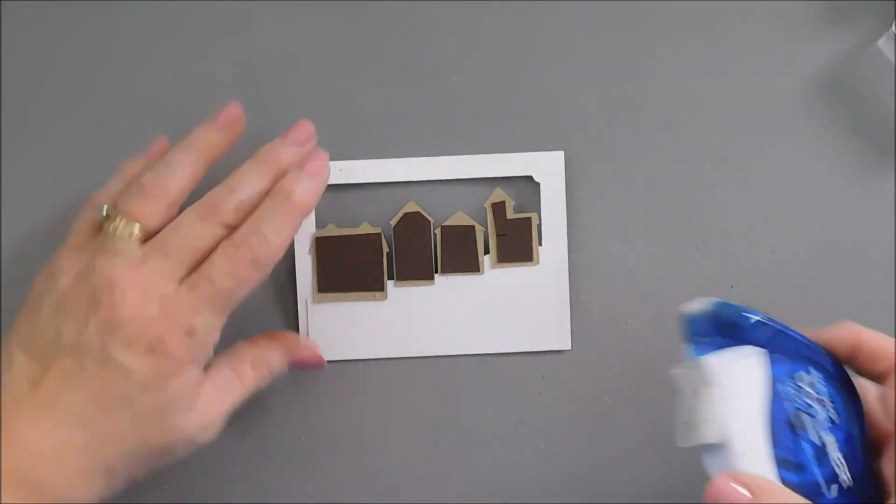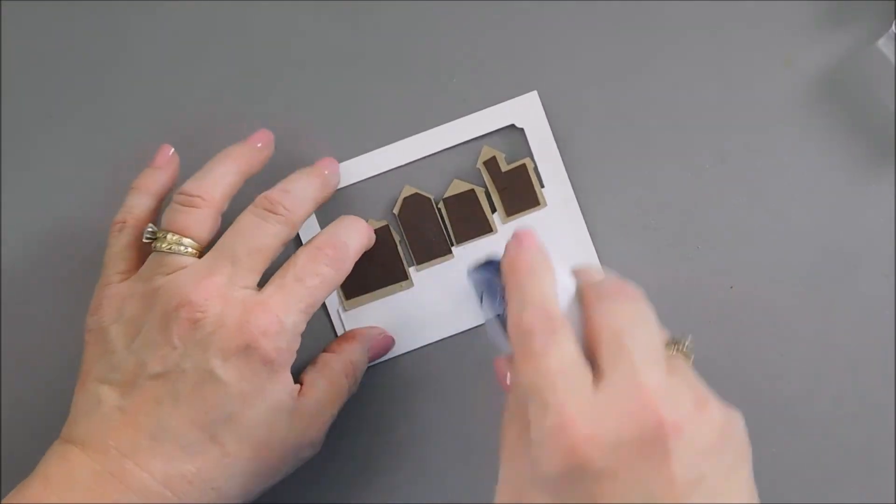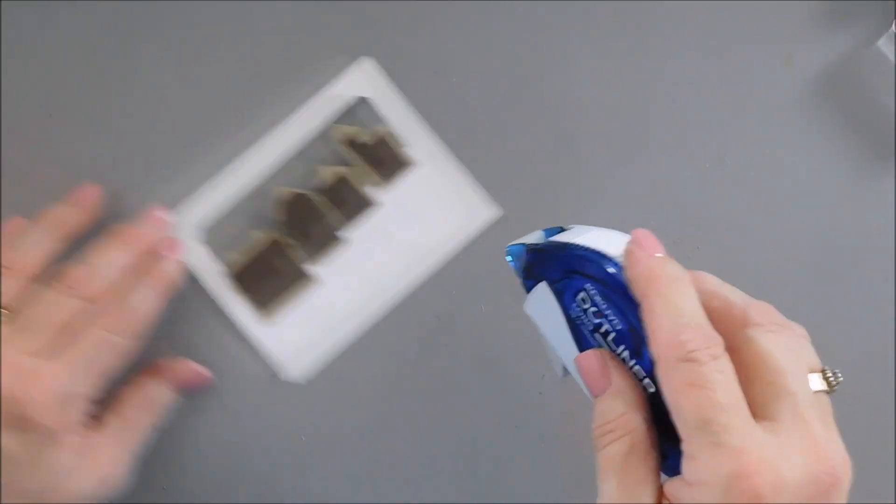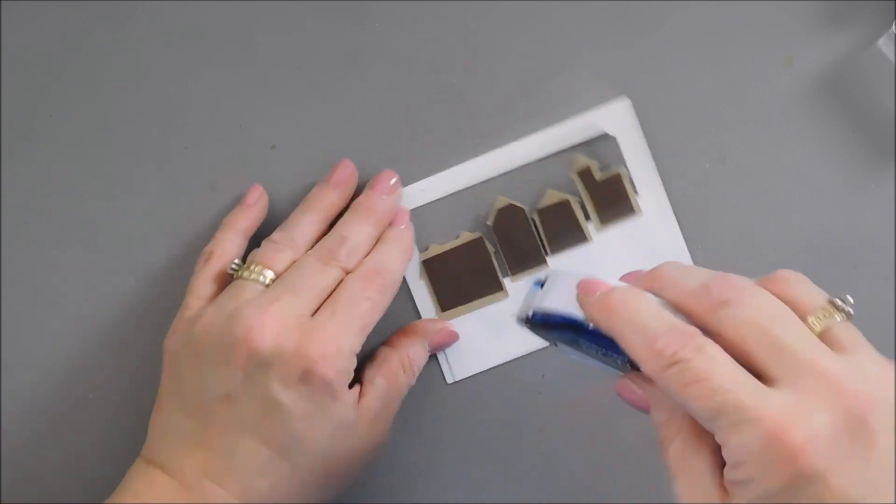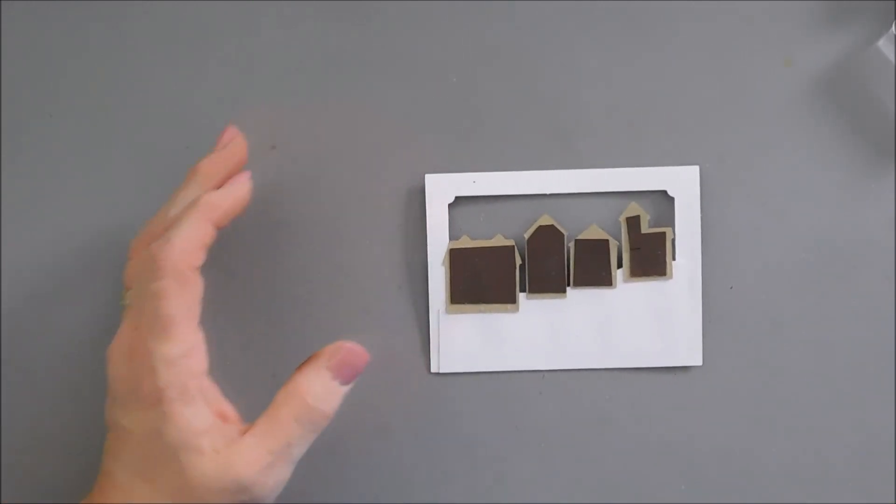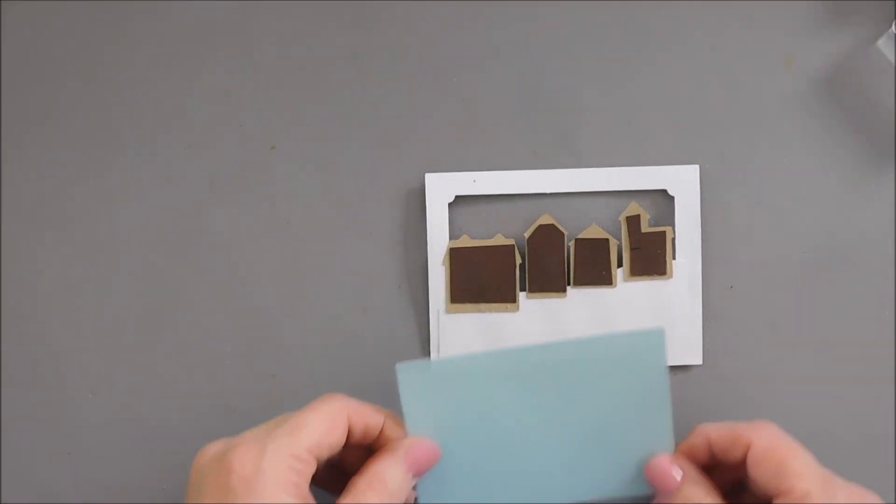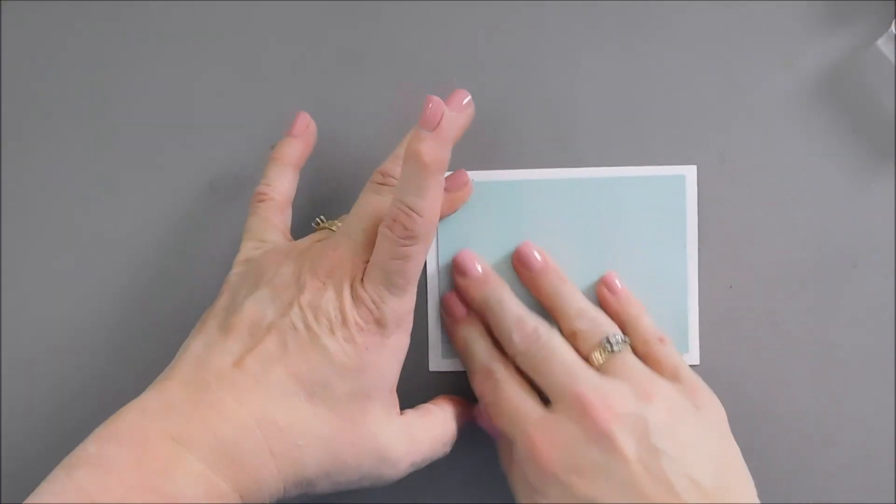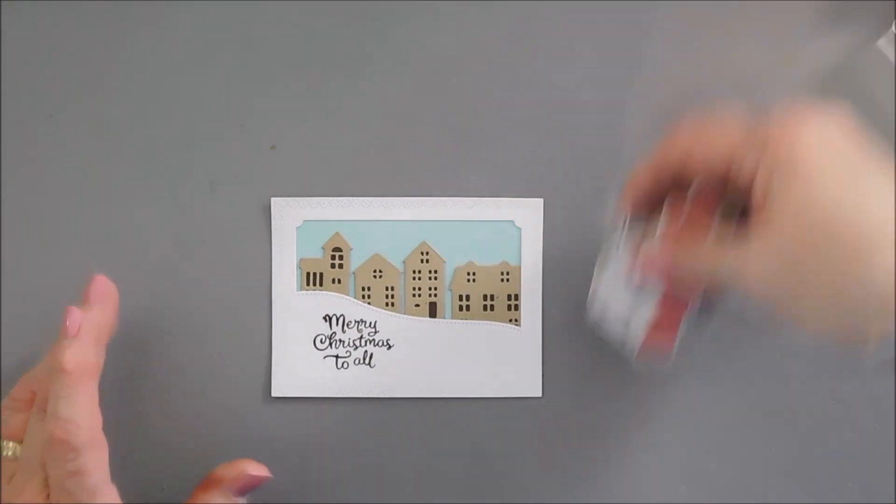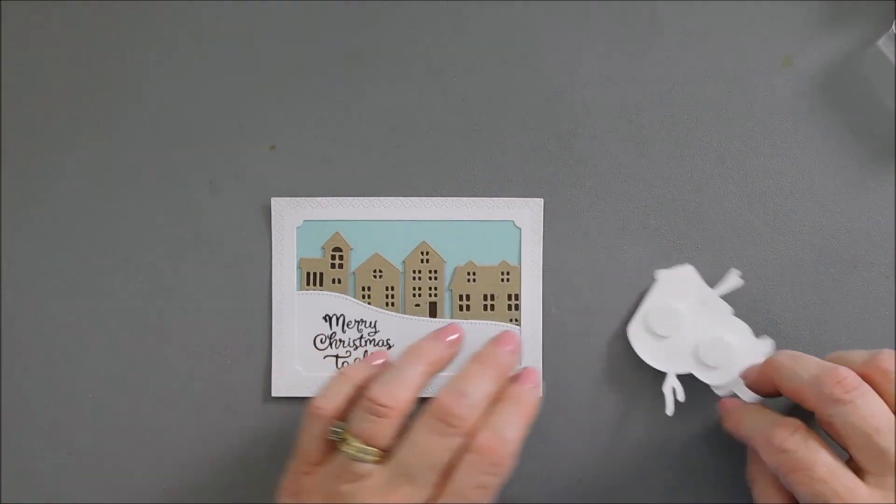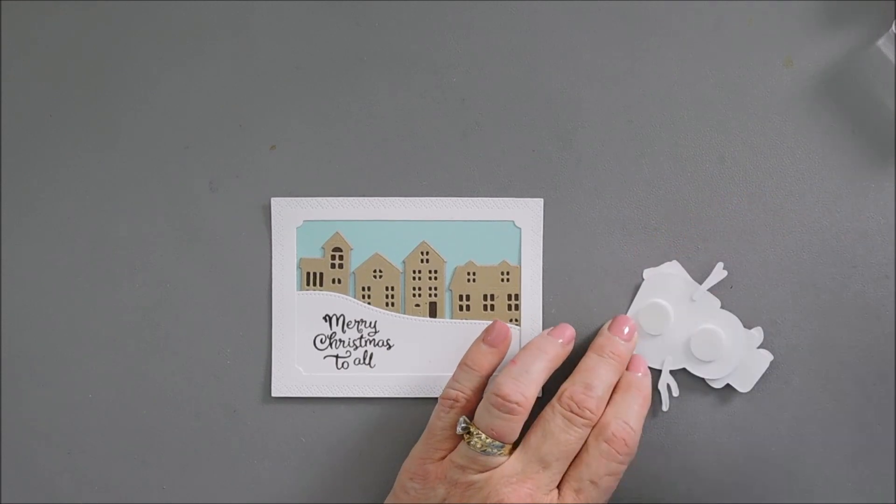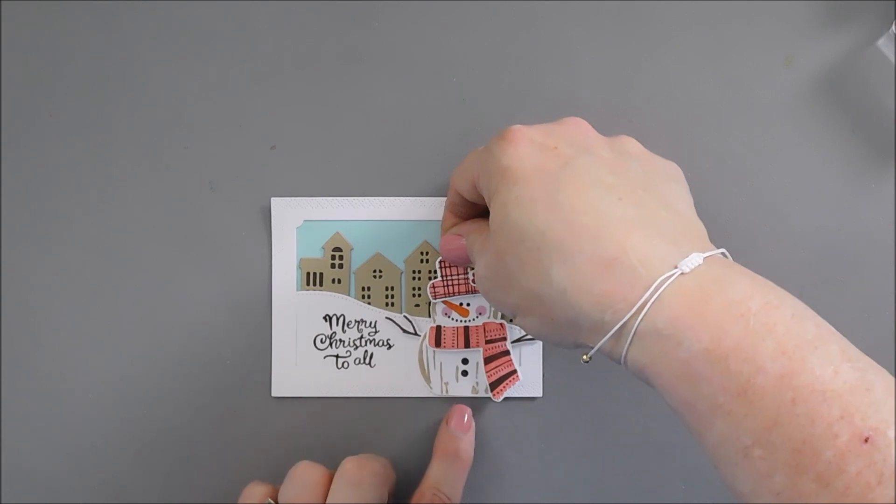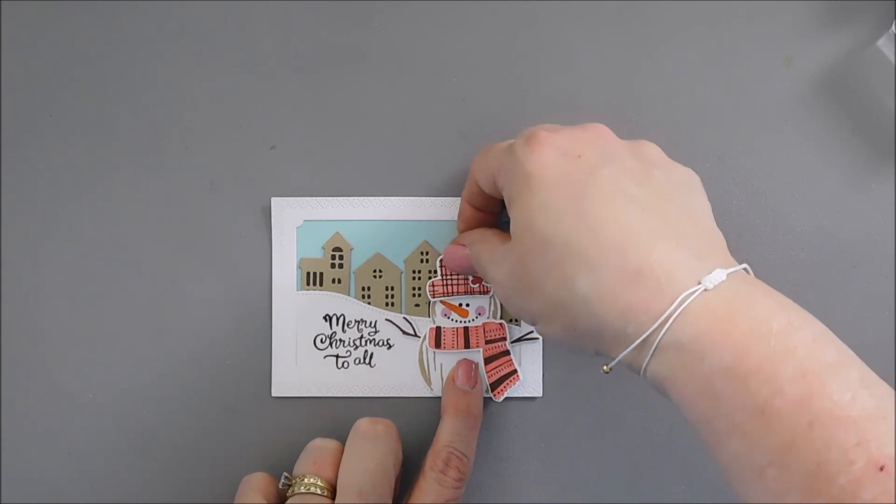I'm going to flip this panel around and just using my tape runner, I'm going to add adhesive all along the edge of the frame and the houses too. I'm going over the houses. And then I have a piece of aqua mist cardstock that will fit behind that window. I'm just going to tack this down right over the top of it.